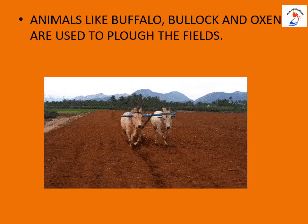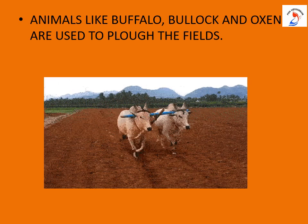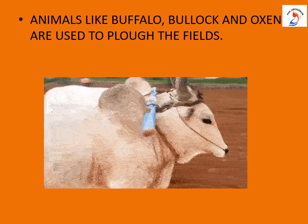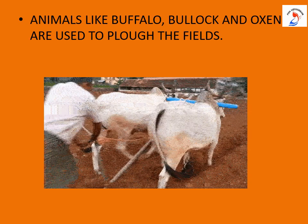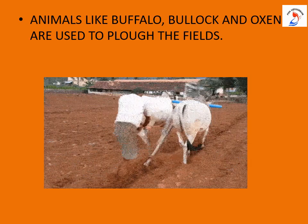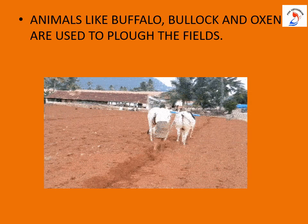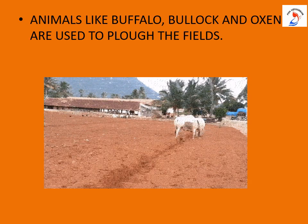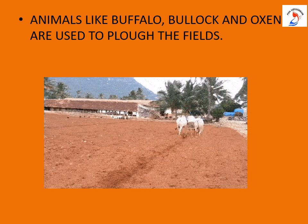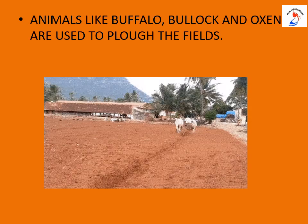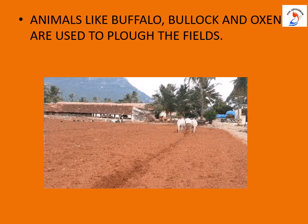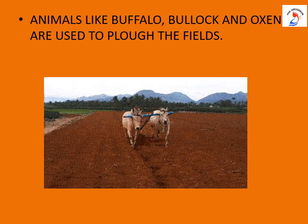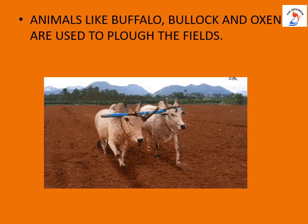Animals like buffalo, bullock and oxen are used to plow the fields. Plowing means to dig and turn over a field before sowing so that the land is ready to sow the seeds. In such a way, animals even help human beings in their work.